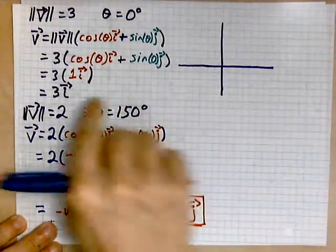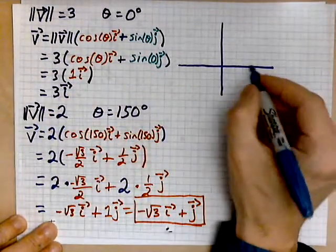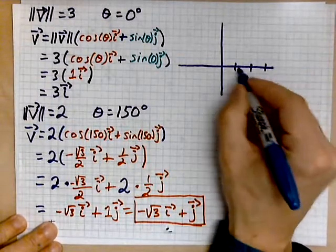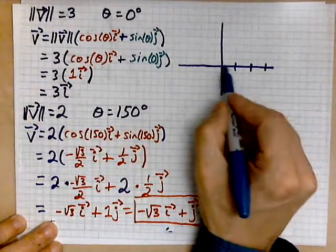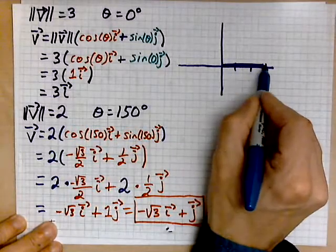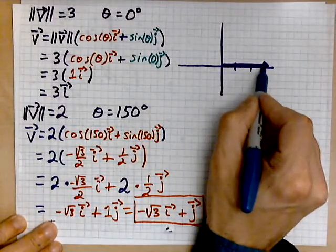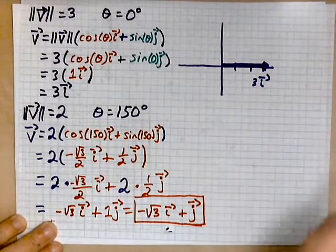For example, this one over here, that's 3i. So, that's your 1, 2, 3. So, this vector is an arrow of length 3 along the x-axis like this. Here, there's your 3i.